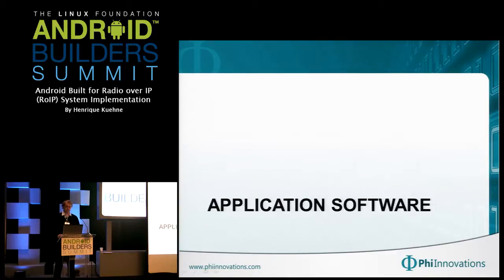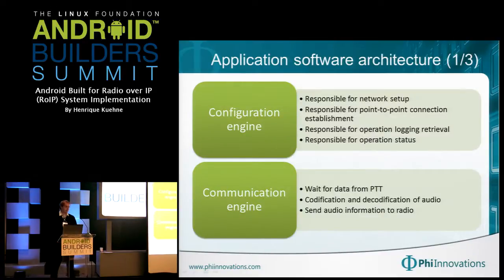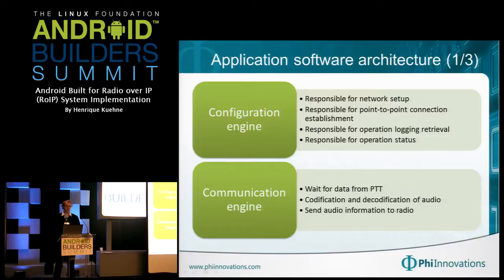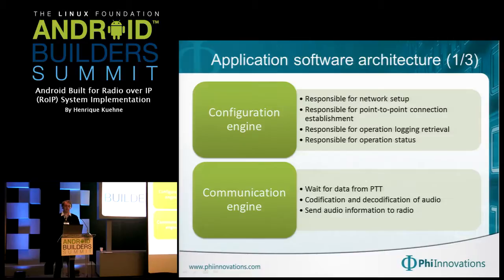The application software can be divided into two main components: the configuration engine and the communication engine. The configuration engine executes the network setup and establishes point-to-point connections, and provides the operation log. The communication engine manages the PTT, the audio compaction, and transmits the audio stream to the other nodes.